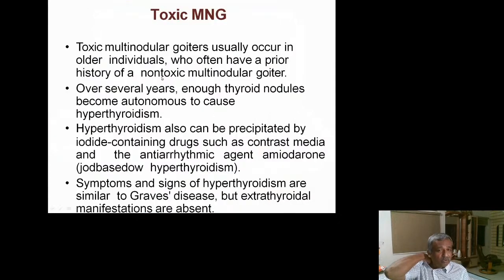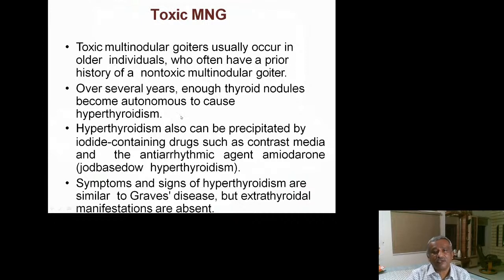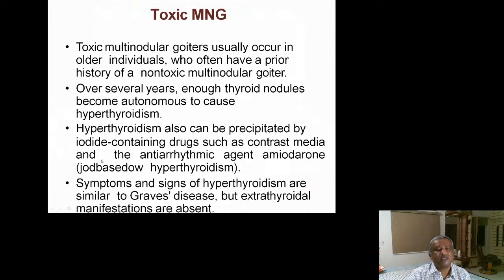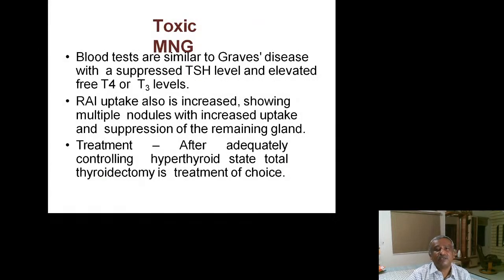Toxic multinodular goiter means multiple nodules in the thyroid gland are producing hormones in large quantities — this is not Graves disease. If these patients are not hyperthyroid but are given contrast media, IV pyelography, or amiodarone (which contains a large amount of iodine), they can develop hyperthyroidism — the Jod-Basedow phenomenon. Symptoms and signs of hyperthyroidism are present but there are no ophthalmic signs or Graves-specific manifestations. TSH is low, FT4 is high, and iodine scan shows hot spots rather than diffuse uptake. Treatment: control hyperthyroid state first, then radioiodine or subtotal/total thyroidectomy.